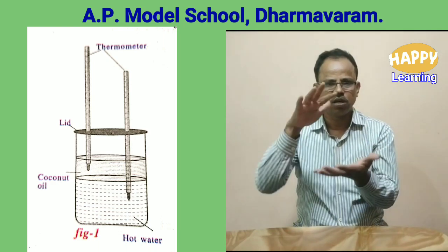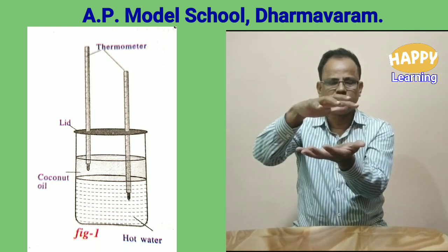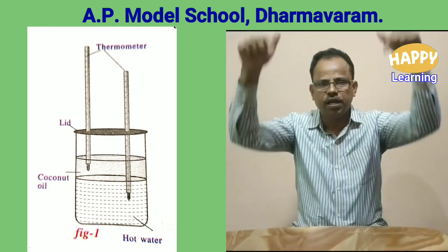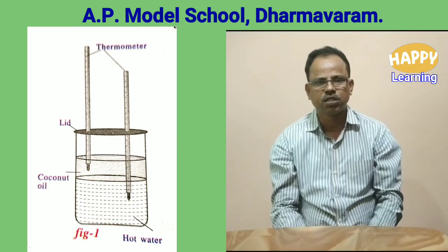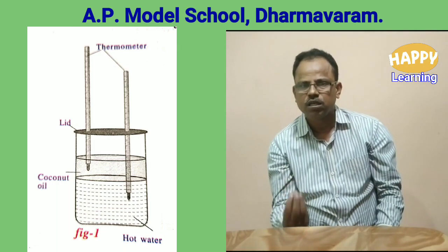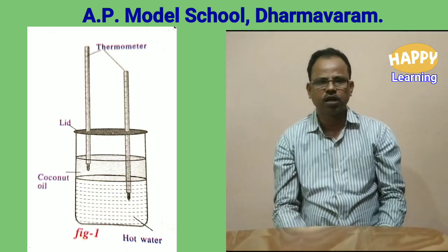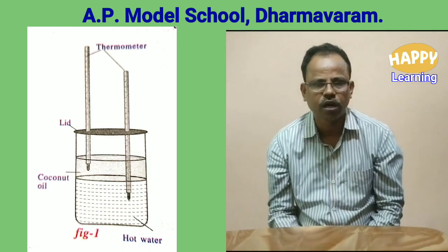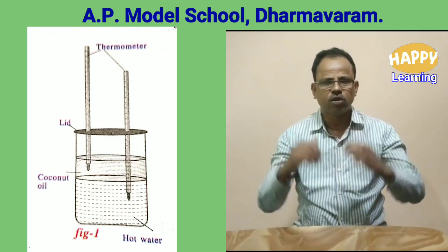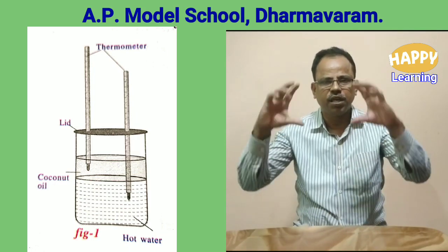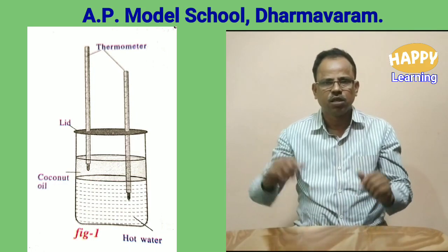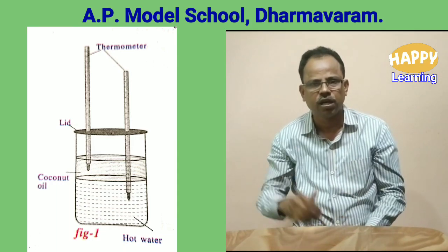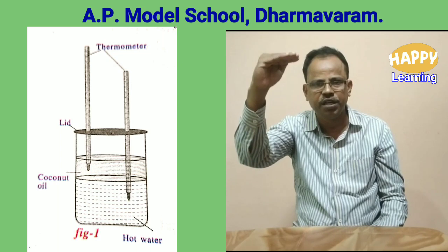So we have a glass jar with hot water, and over that cold coconut oil. There is a lid with two thermometers — one thermometer bulb is inside the hot water and another thermometer bulb is inside the coconut oil. If you carefully observe the readings of the thermometers, you can see that the thermometer whose bulb is in the hot water is slowly decreasing in reading.